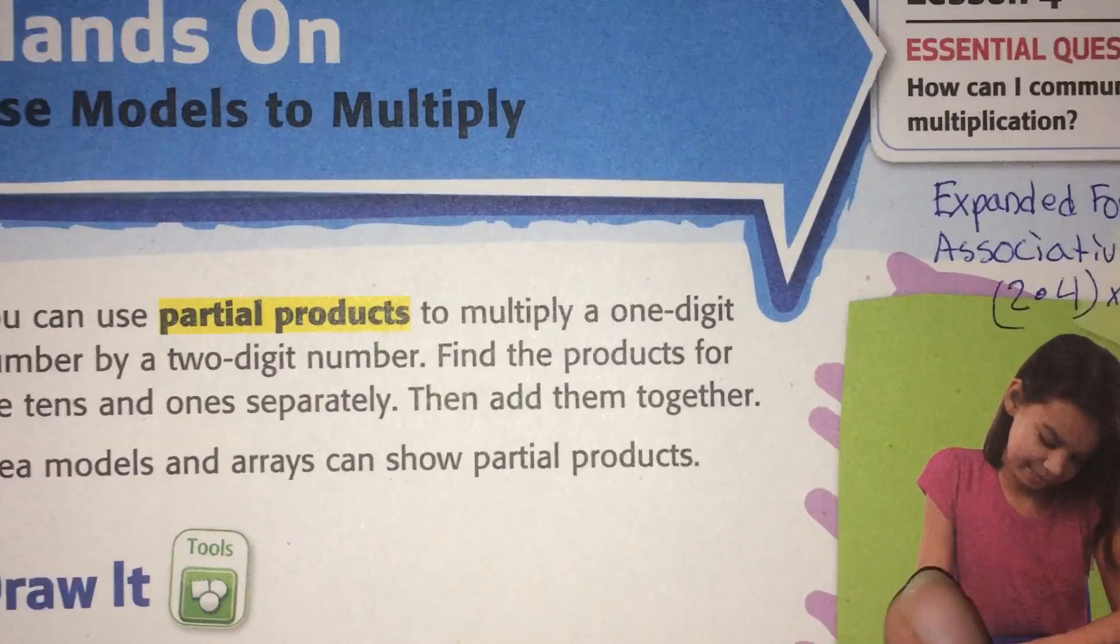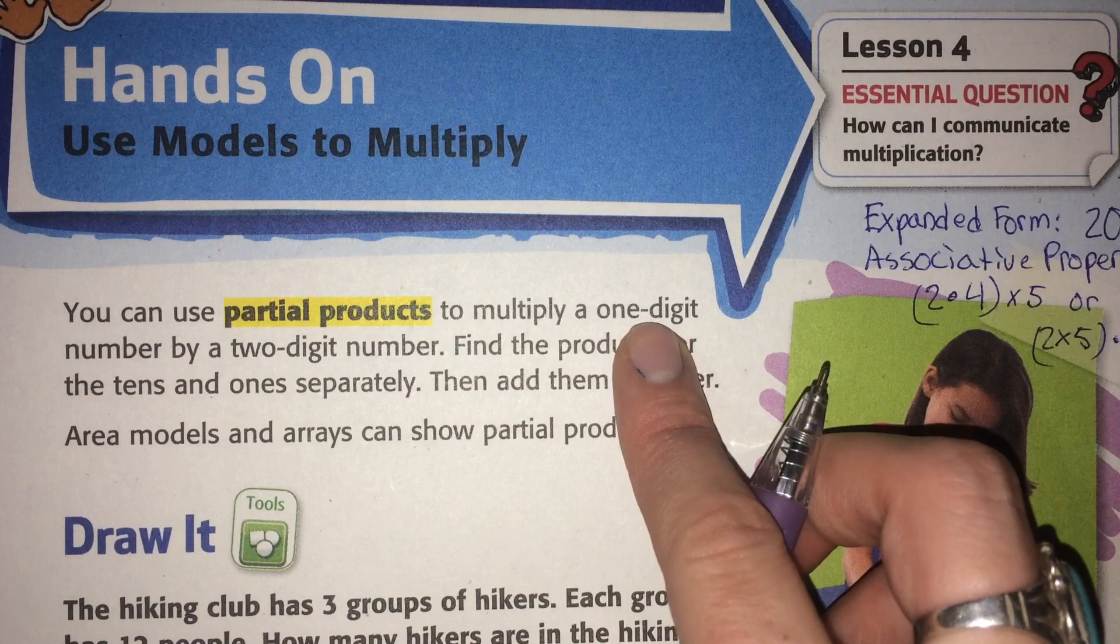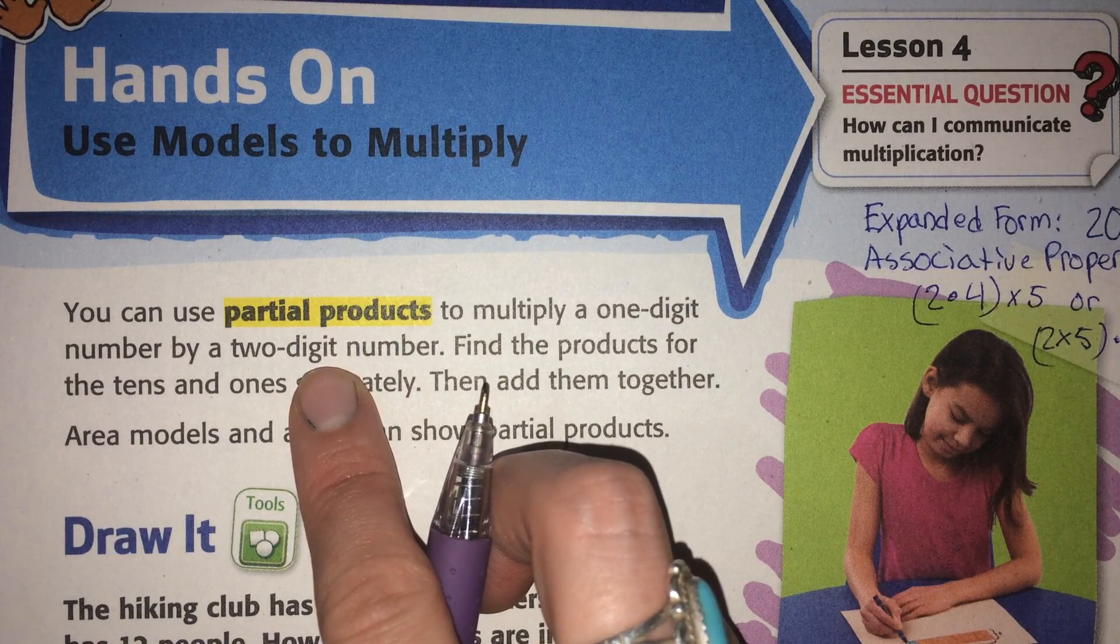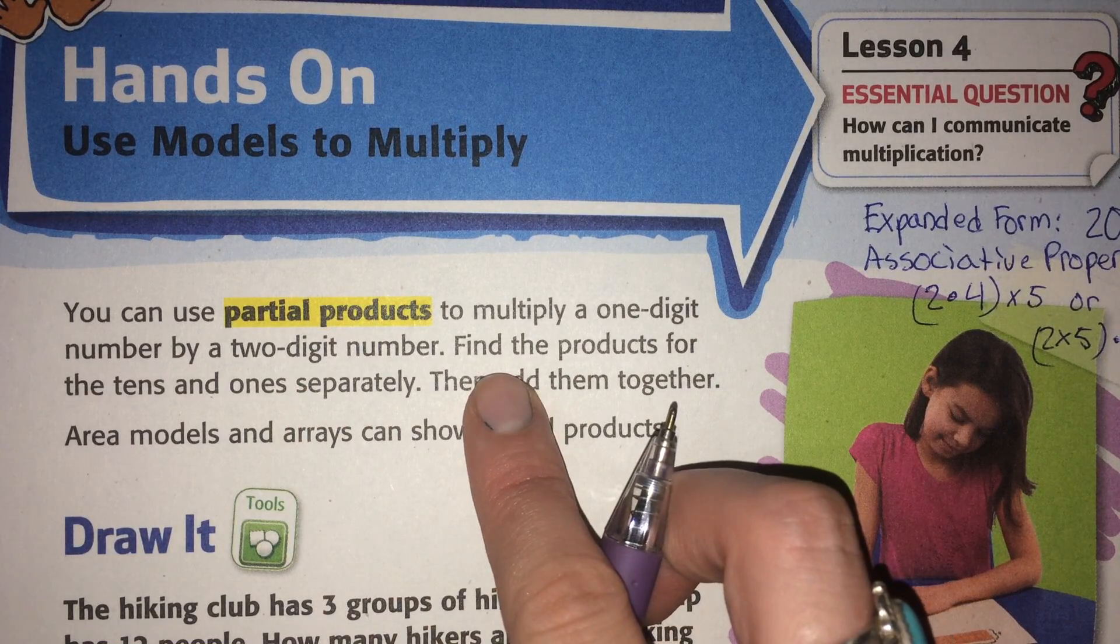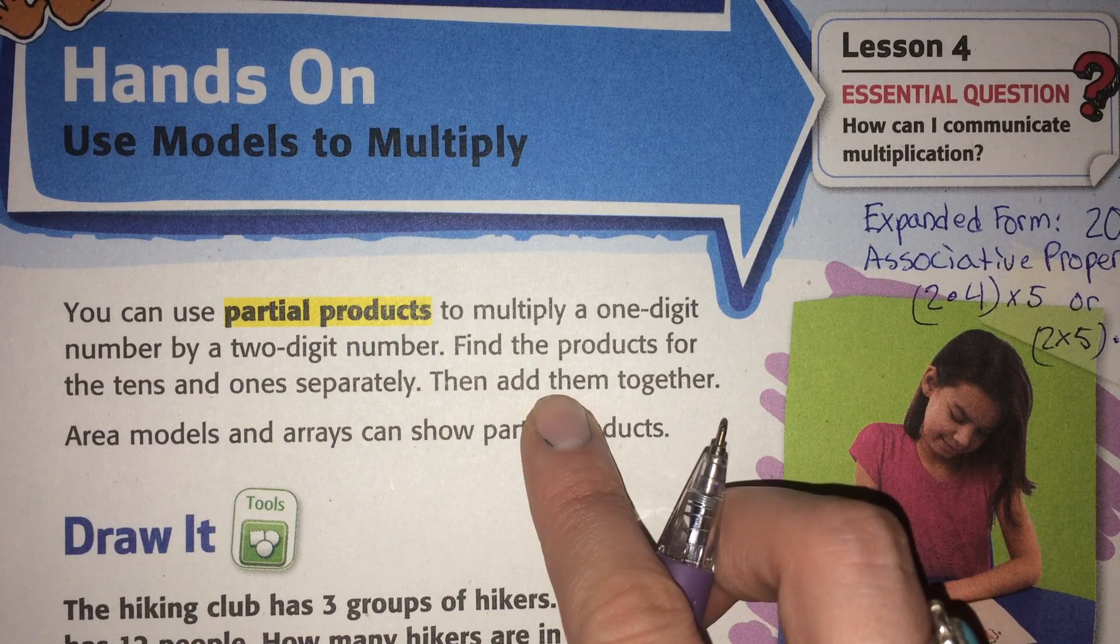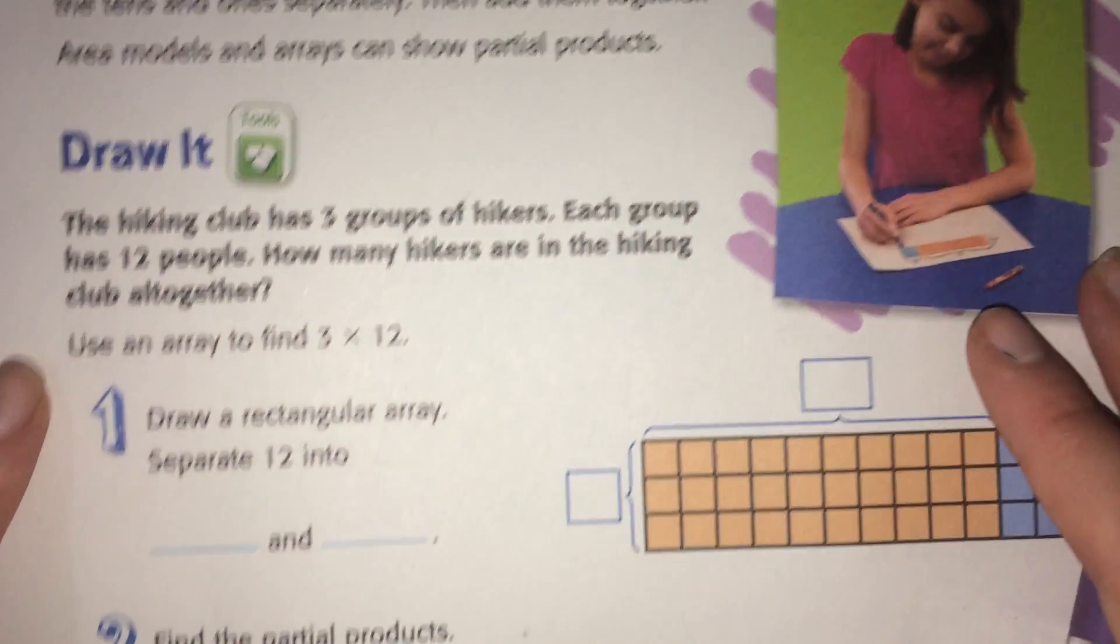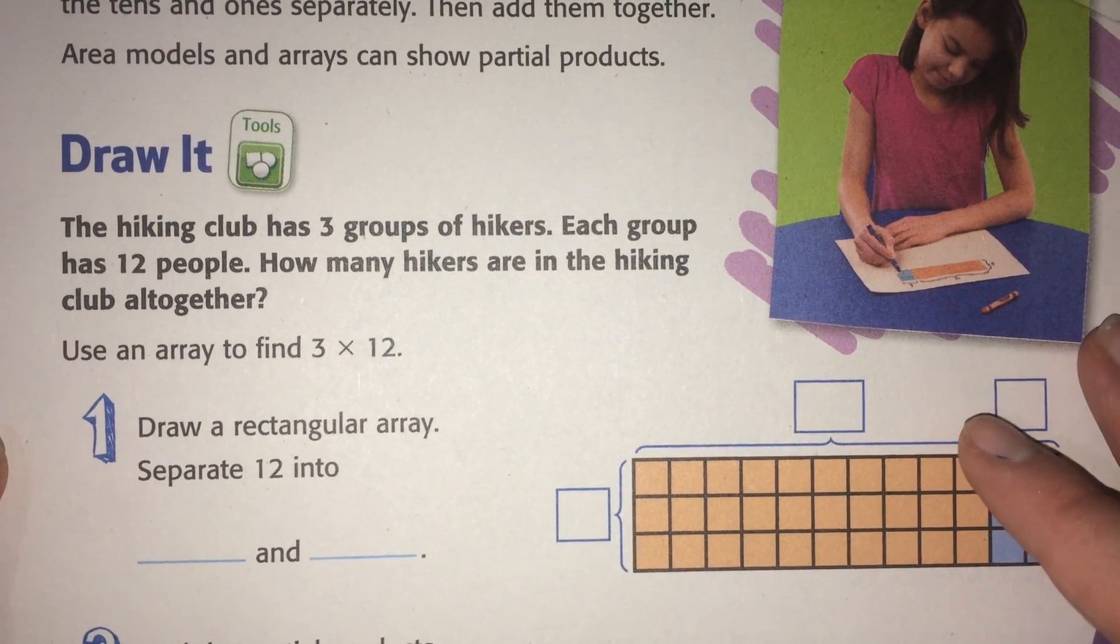Partial products: You can use partial products to multiply a one-digit number by a two-digit number. Find the products for the tens and ones separately, then add them together. Area models and arrays can show partial products. So what do they mean? Let's take a look.